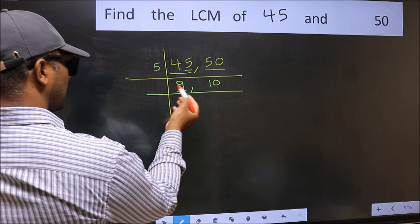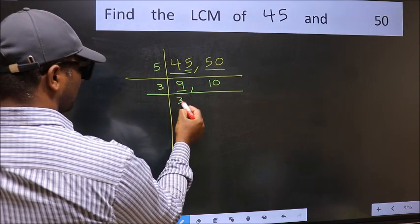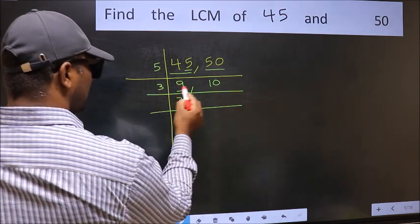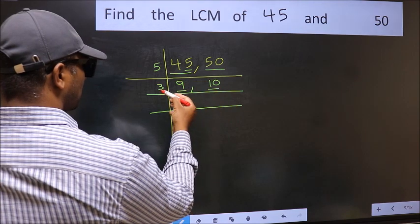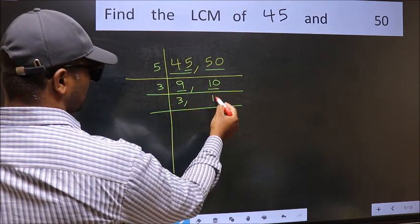Now, here we have 9. 9 is 3 threes, 9. The other number, 10, is not divisible by 3, so you write it down as it is.